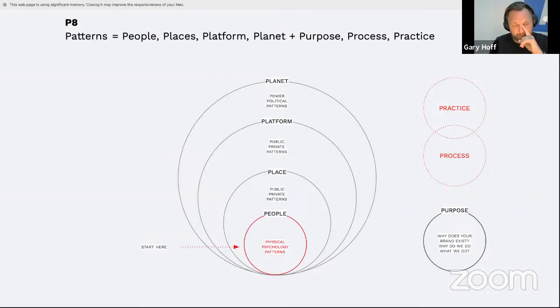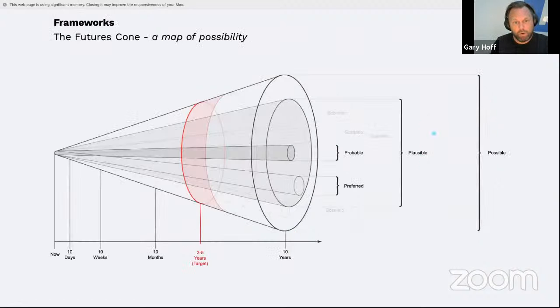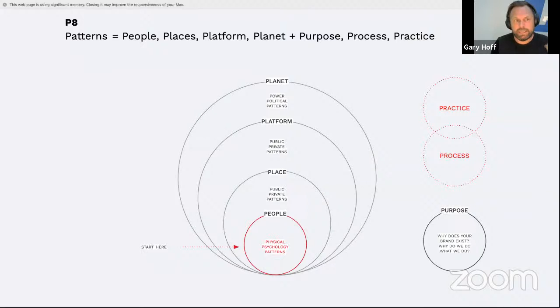One of the other lenses I like to put on that, if you just took one point on that futures cone, is to think about P8 or P4. If you just take four Ps, and really, for me, the best advice is to start with people. Start with users, start with stakeholders, start with your customers. What is their physical, psychological patterns around people? And then the next lens out from that would be place. So physical places, public, private places. And then the next layer out from that would be platform. So thinking of technology, networks, what technology platforms and devices are being used.